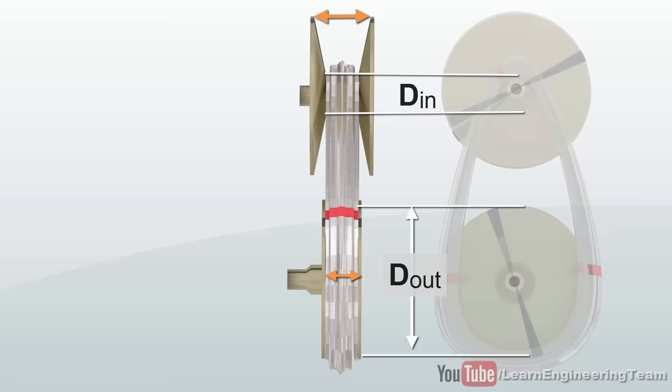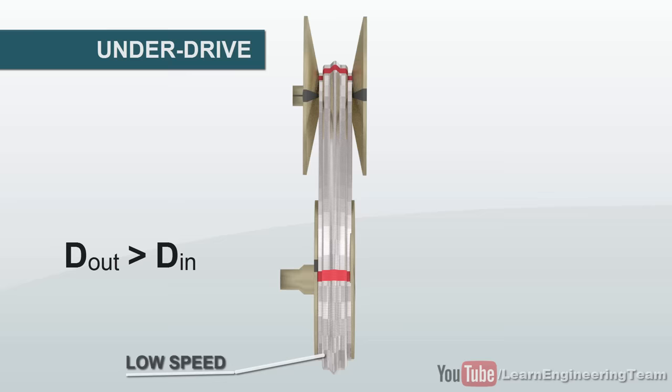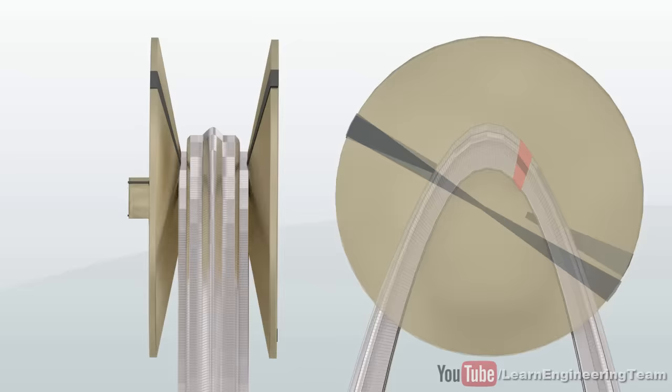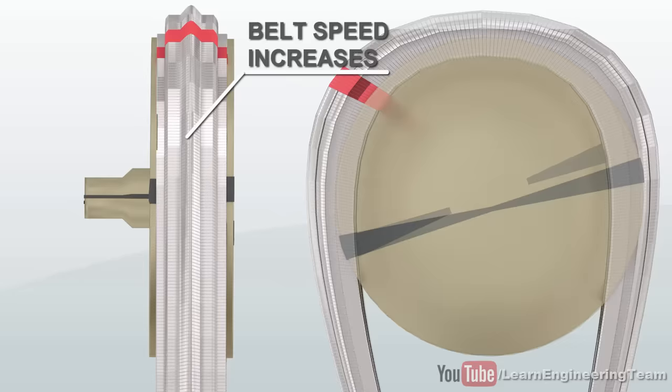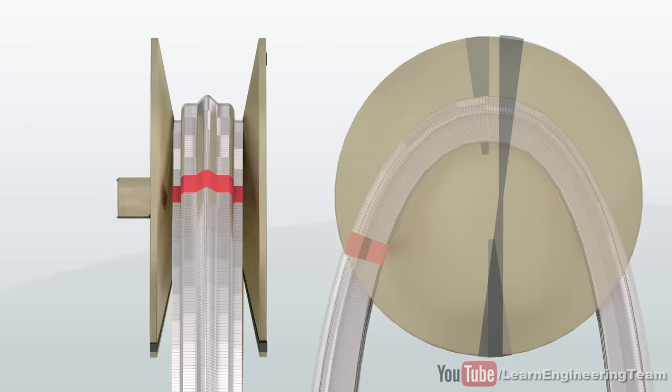The gap between the cones determines the effective diameter of the pulleys. For this configuration, it is clear that the output speed will be less than the input speed. As the gap decreases, the effective diameter of the pulley increases. This simple mechanism forms the basic operation of CVT.